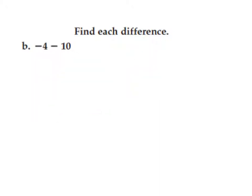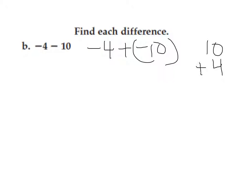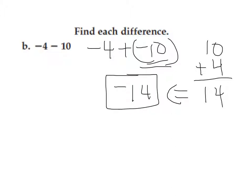Find each difference. Problem B: negative 4 minus 10. I'm going to rewrite it using the additive inverse: negative 4 plus negative 10. I notice the signs are the same, so I'm going to take 10 and 4, their absolute values, and add them together. Then I check the sign — 10 is the largest absolute value and that sign is negative. So the answer is negative 14.